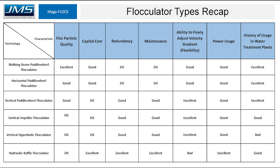To recap, each technology is listed by floc particle quality: walking beam flocculators are at the top, followed by horizontal and vertical paddle wheels, and then the other flocculators below in quality. As far as capital cost, the baffle wall flocculator is the lowest. The horizontal and walking beam are the next lowest if you amortize the drive cost over many reels, and then the vertical types have moderate capital costs. For redundancy, the baffle wall has no moving parts and will always function. Next would be the vertical units where if one goes out there are usually several others still functioning. The walking beam and horizontal have just one drive.